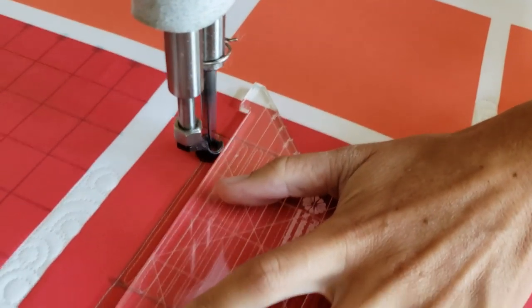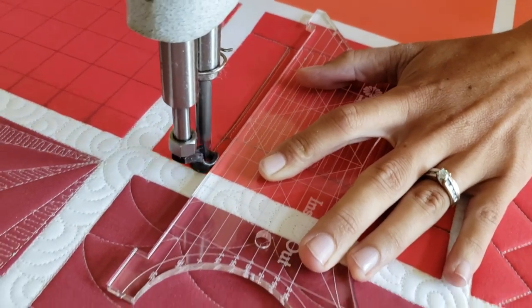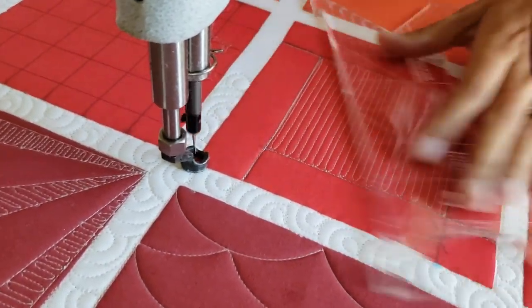From there I'll travel along a previous stitch line to the outside of the block where I'll stitch in the ditch all the way around the outside of the block.